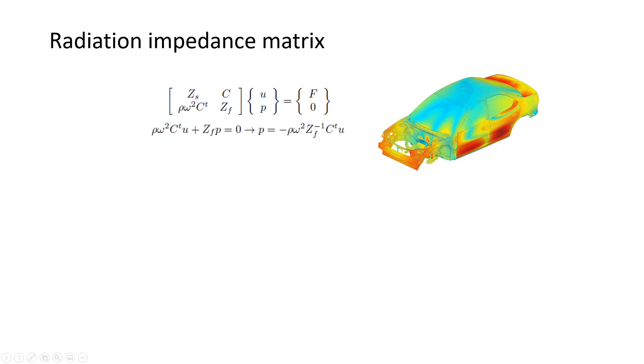So the second equation can be written explicitly, rho omega squared C transpose times U plus Zf times P is equal to zero. And formally, this equation can be solved for the pressure to obtain that the pressure field is minus rho omega squared times the inverse of the acoustic stiffness matrix times the transpose of the coupling matrix times the displacement vector.